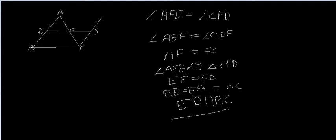Now there is another way of stating the midpoint theorem, which is that if a line is drawn through the midpoint of one side parallel to another side, then it bisects the third side. That is, if I draw a line from point E, which is the midpoint of AB, and parallel to BC, then it would cut AC at F and F would be the midpoint of AC. It can be proved similarly as we did earlier.